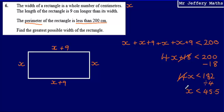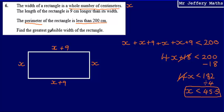I've solved my inequality, and I can say that x is less than 45.5. Referring back to the question, I'm asked to find the greatest possible width, and I know x is less than 45.5. I'm also told that the width is a whole number of centimetres. So the greatest possible width is the greatest whole number that is less than 45.5, which is 45 centimetres. Final answer: 45 centimetres.